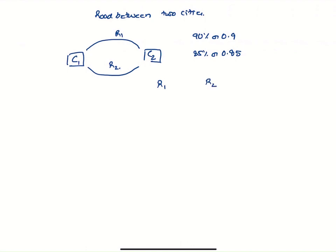So probability of R1 or R2 is 0.9 plus 0.85 minus probability of R1 intersection R2.